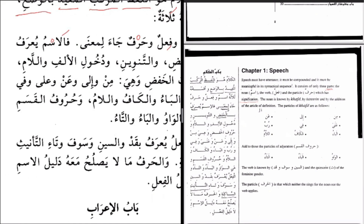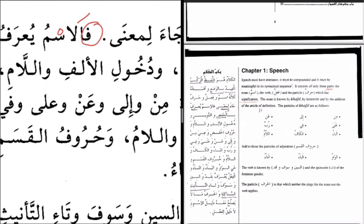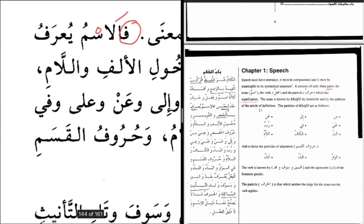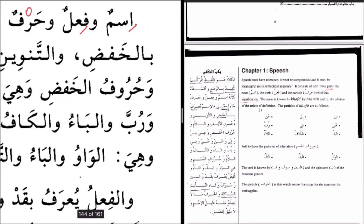As for the noun — 'fal' is a conjunctive particle, so 'fal-ismu' means 'as for the noun.' It is identified — how? Bil-khafud, by the genitive case. You've heard so much about nominative case, accusative case — genitive case is called in Arabic 'khafud.' It has another name in Arabic, which is 'jar.' So al-khafud and al-jar are interchangeable terms.